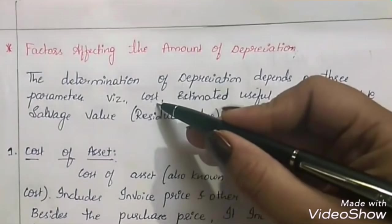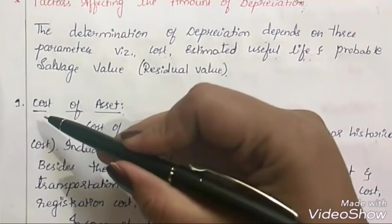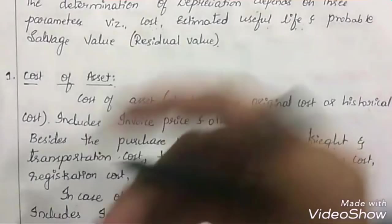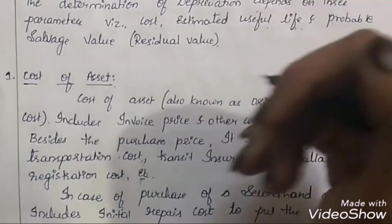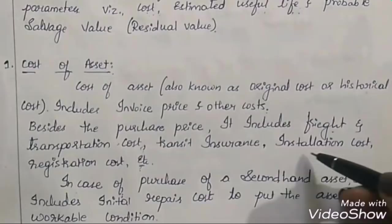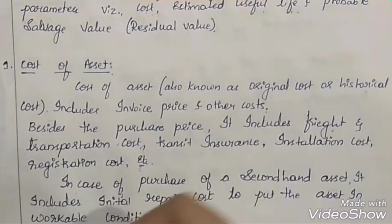Let's understand these terms in detail. The first factor is cost of asset. Cost of asset is not only the purchase price — it also includes various costs such as freight and transportation cost, transit insurance, installation costs, and registration cost. It includes all costs necessary for putting that asset in a working condition.